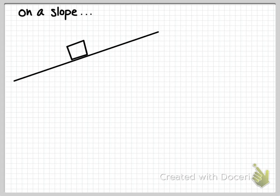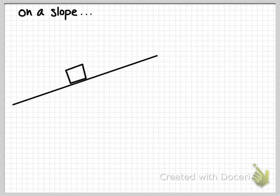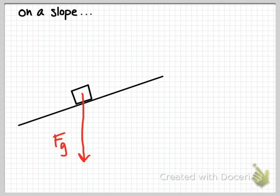When we put an object on a slope, this is where things change. One thing doesn't change: force of gravity. The force of gravity is always, always, always directly down into the Earth — a straight line into the Earth. Normal force is a force coming off the surface, being exerted by the surface upward on an object. Normal force is always, always, always perpendicular to the surface. When an object is on a slope, the normal force and the force of gravity are not directly in opposition with one another.